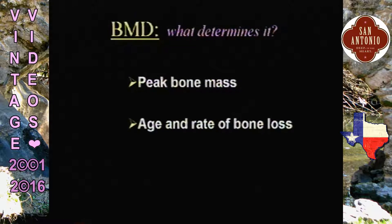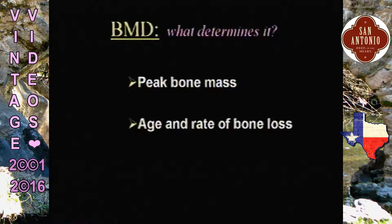Also ask about factors affecting their attainment of peak bone mass — for instance if they were sick while growing up, immobilized for some reason, or had amenorrhea. In addition to peak bone mass, the age and rate at which bone loss occurs also determines bone mineral density. We typically think of losing bone at menopause — you can lose 2 to 5% per year in the early menopausal period. Men can also lose bone with age, but it's much less, around less than 1% per year.